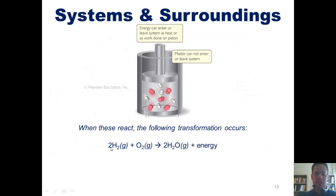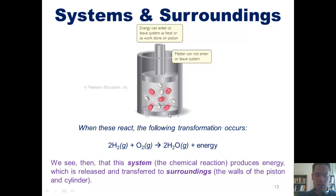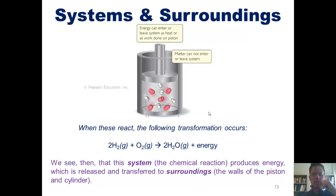Incidentally, when these two gases react they form H₂O gas and release energy. This system — the chemical reaction — also produces energy which is released and transferred into the surroundings, that is, the walls of the piston and cylinder. With certain chemical processes, the products made aren't just other molecules, but also include things such as energy. So we can consider energy to be a product.